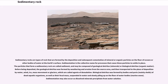Sedimentary rocks are types of rock that are formed by the deposition and subsequent cementation of mineral or organic particles on the floor of oceans or other bodies of water at the earth's surface. Sedimentation is the collective name for processes that cause these particles to settle in place. The particles that form a sedimentary rock are called sediment.